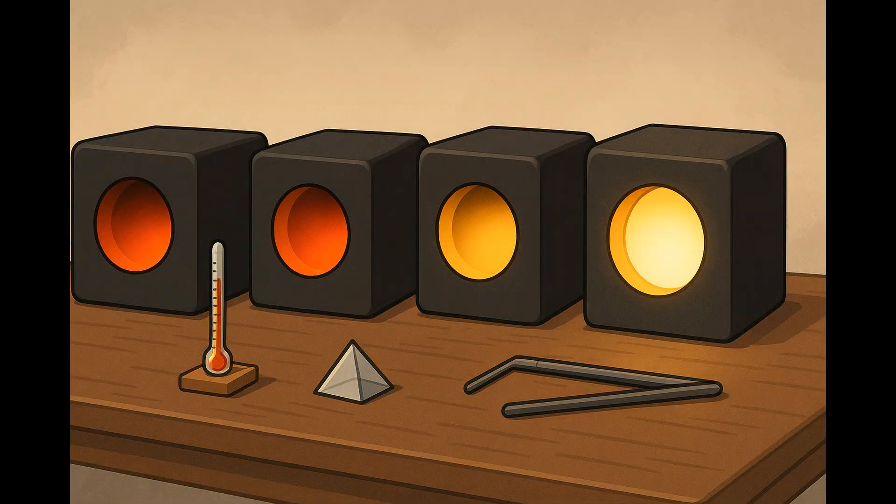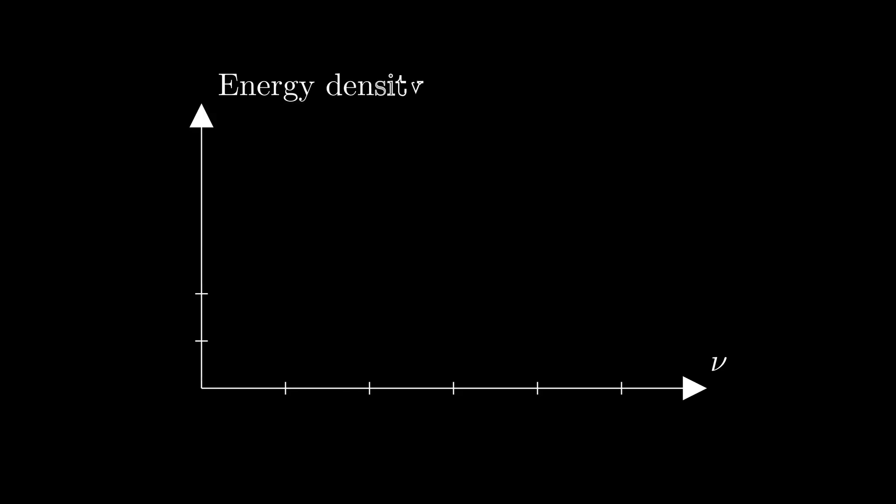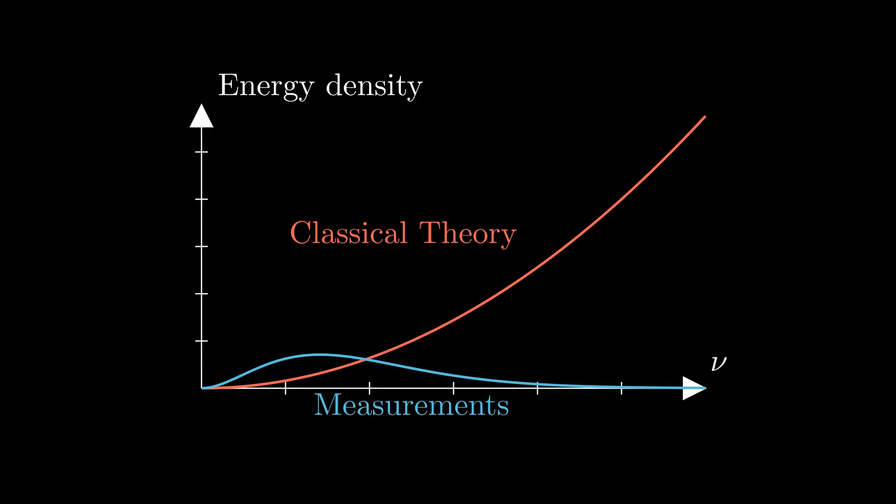Black body radiation. How ideal non-reflective objects glow when heated. Classical physics said energy should rise without limit at short wavelengths, creating an impossible ultraviolet catastrophe.